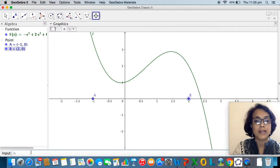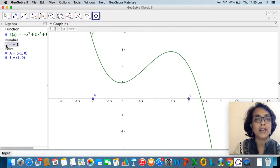I'm now going to add a slider n and I'll enter n equal to 1 in the input bar. When I press enter it shows as a number, but when I click on this white circle the slider will become visible on the graphics view.